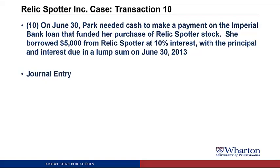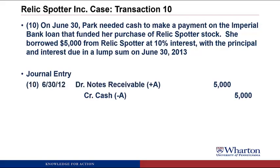Let's start with what we know: Relic Spotter paid $5,000 cash to Rebecca Park. We're paying cash — cash is going down. Since cash is an asset, assets go down with credits, so we credit cash for $5,000. What is Relic Spotter getting? Essentially they're making a loan. That loan is going to be an asset because they're entitled to receive $5,000 of cash back from Rebecca Park at some point in the future. We debit Notes Receivable for $5,000.